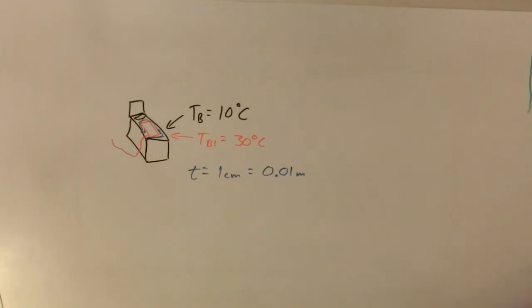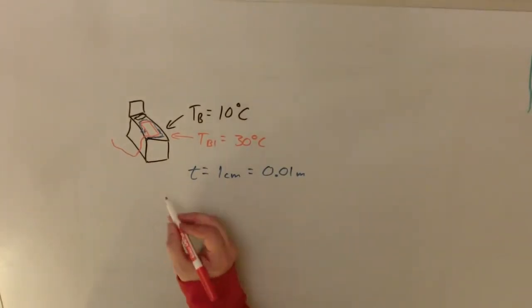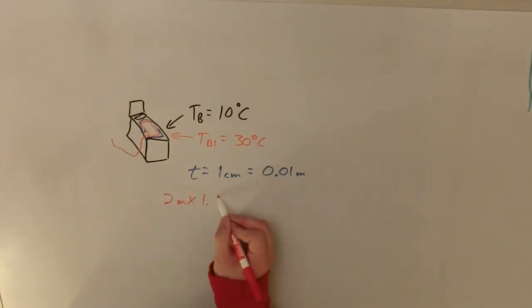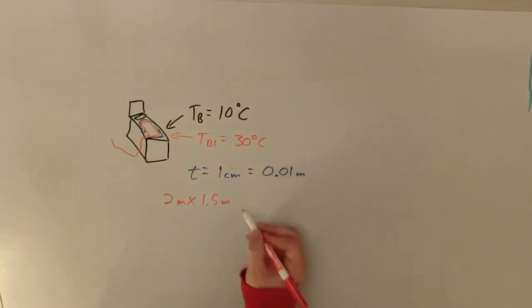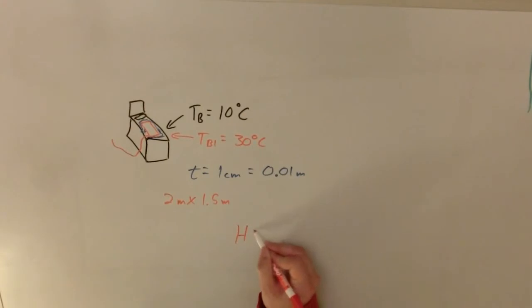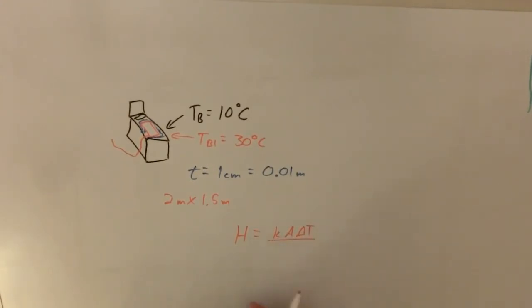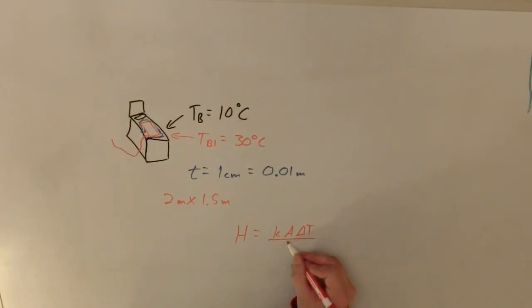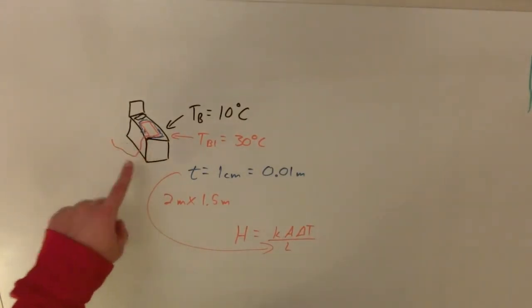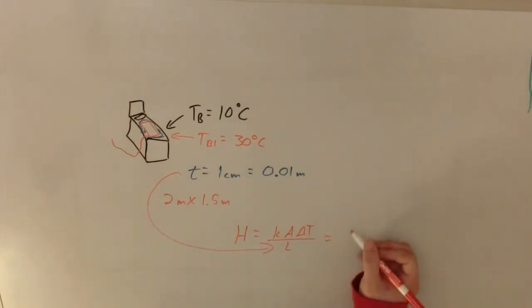I also need to know how big the blanket is — it's 2 meters by 1.5 meters, so multiplying those gives the area. Our equation looks like this: H, the heat transfer rate, equals K times area times the temperature difference between the two objects — not a changing temperature, just the warm thing versus the cold thing — divided by L, which is the thickness, the distance the heat has to travel through.